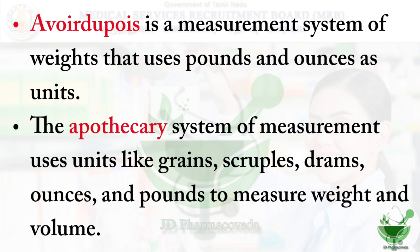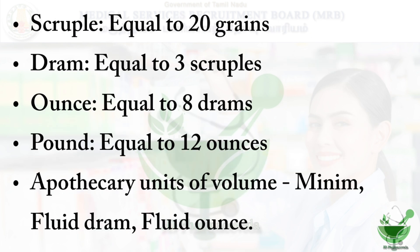In the apothecary system, the units are grains, scruples, drams, ounces, and pounds. One scruple equals 20 grains, one dram equals 3 scruples, one ounce equals 8 drams, and one pound equals 12 ounces. Volume in the apothecary system is measured as minim, fluid dram, and fluid ounce.